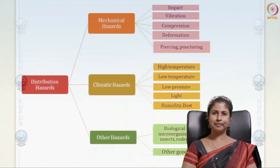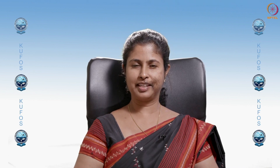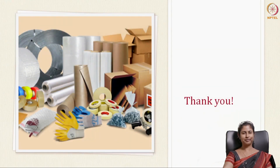Summing up this session: we talked in detail about distribution hazards — mechanical, climatic, and other hazards — that a transit package will go through. We also described what a transport worthiness test is, how they are done, and the two important types: actual tests and simulated tests. Thank you, see you in the next session where we will give you a detailed look at all the transport worthiness tests done in the packaging industry. Good day.